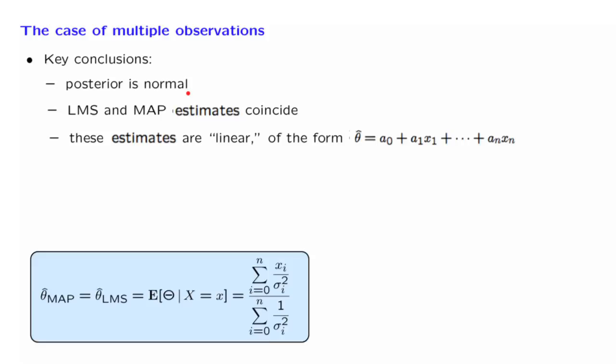Because it is a normal distribution, the location of its peak is the same as the expected value. And for this reason, the conditional expectation estimate and the maximum a posteriori probability estimates coincide. And finally, the form of the estimates that we get is a linear function in the xi's. And this linear function is a very convenient property to have because it allows further analysis of these ways of obtaining estimates.